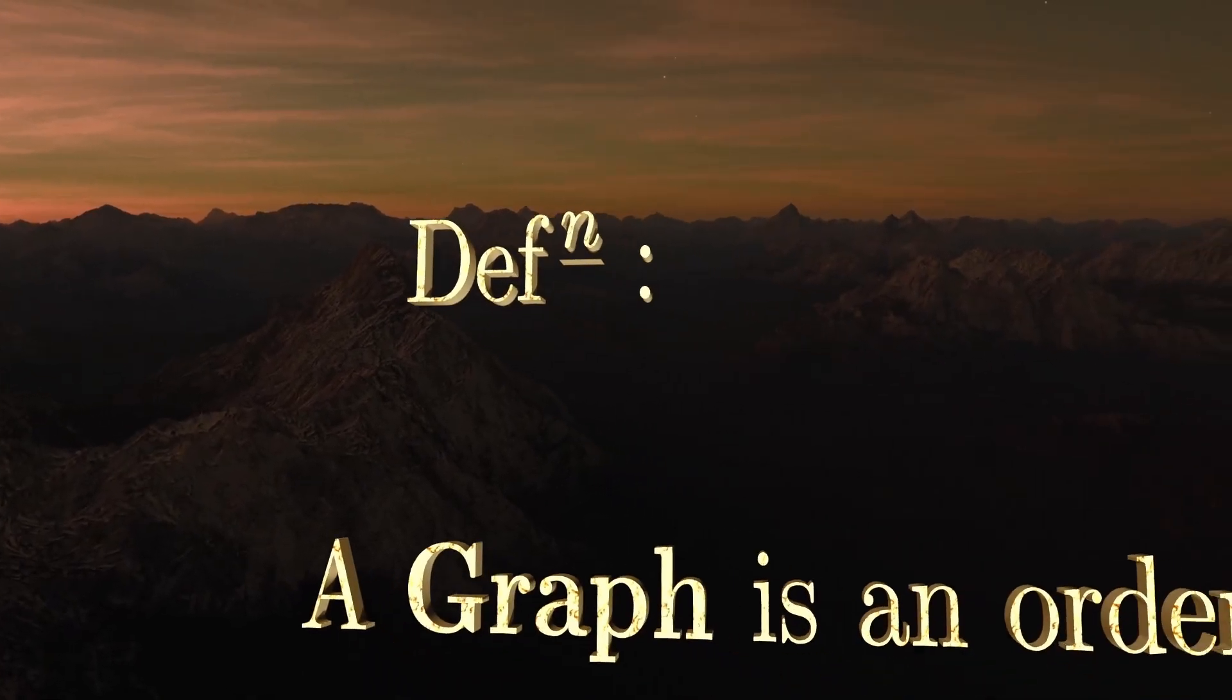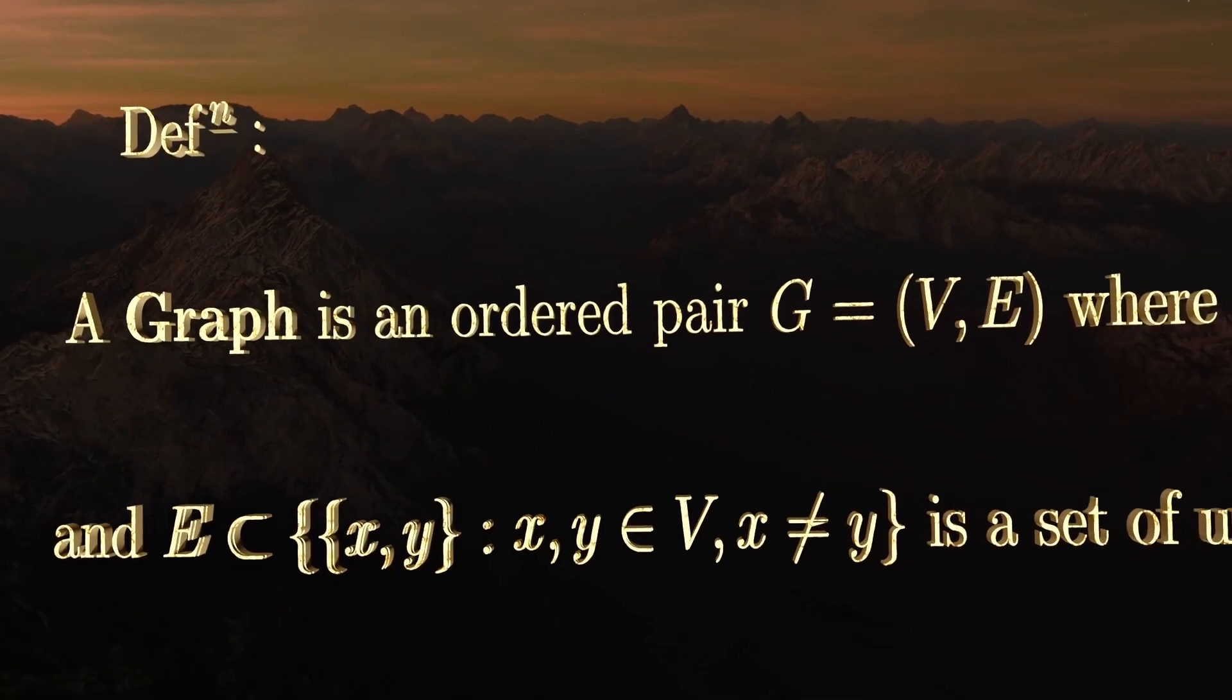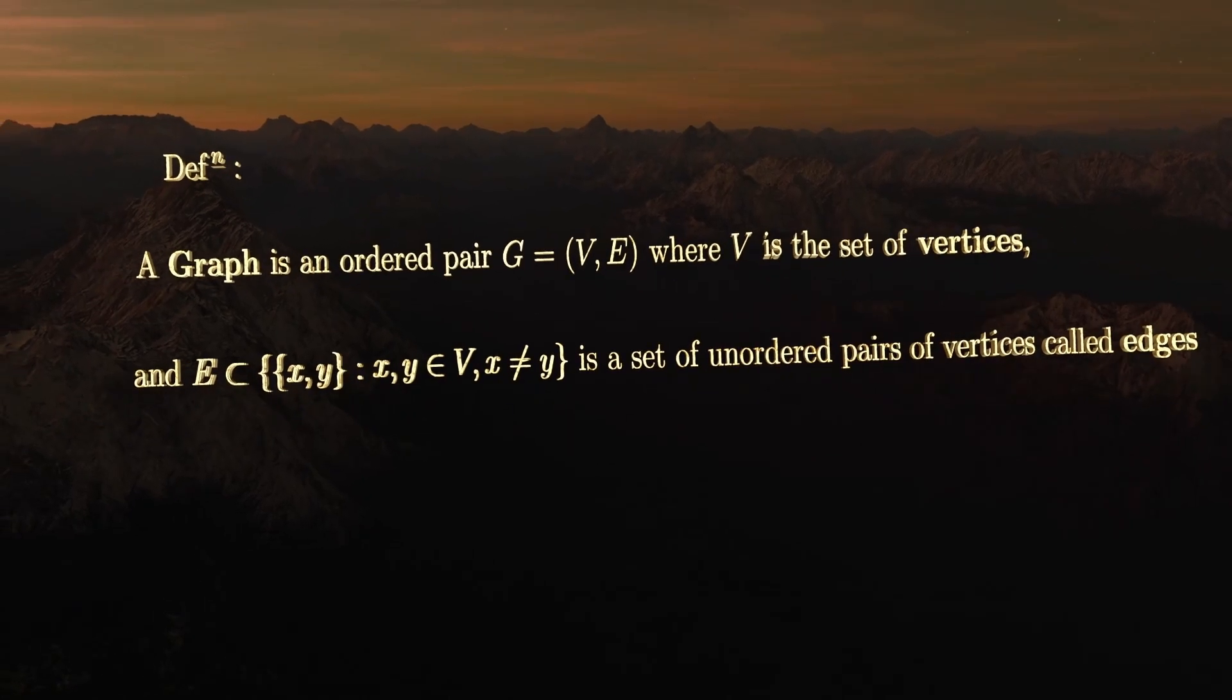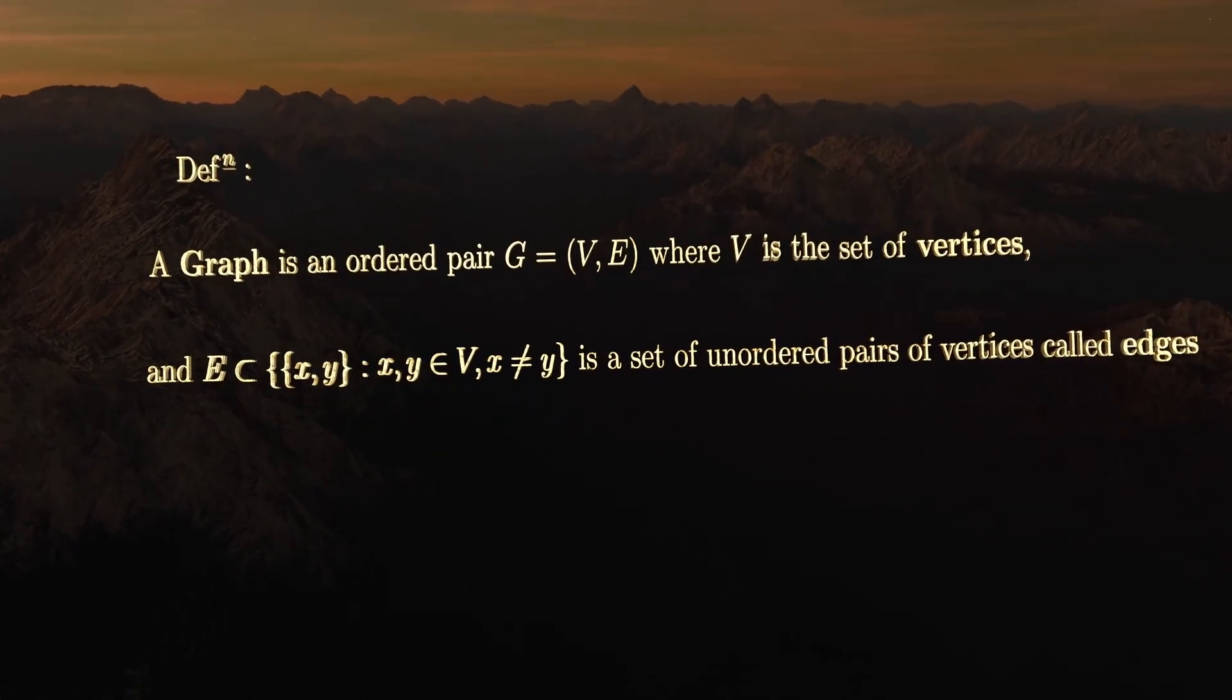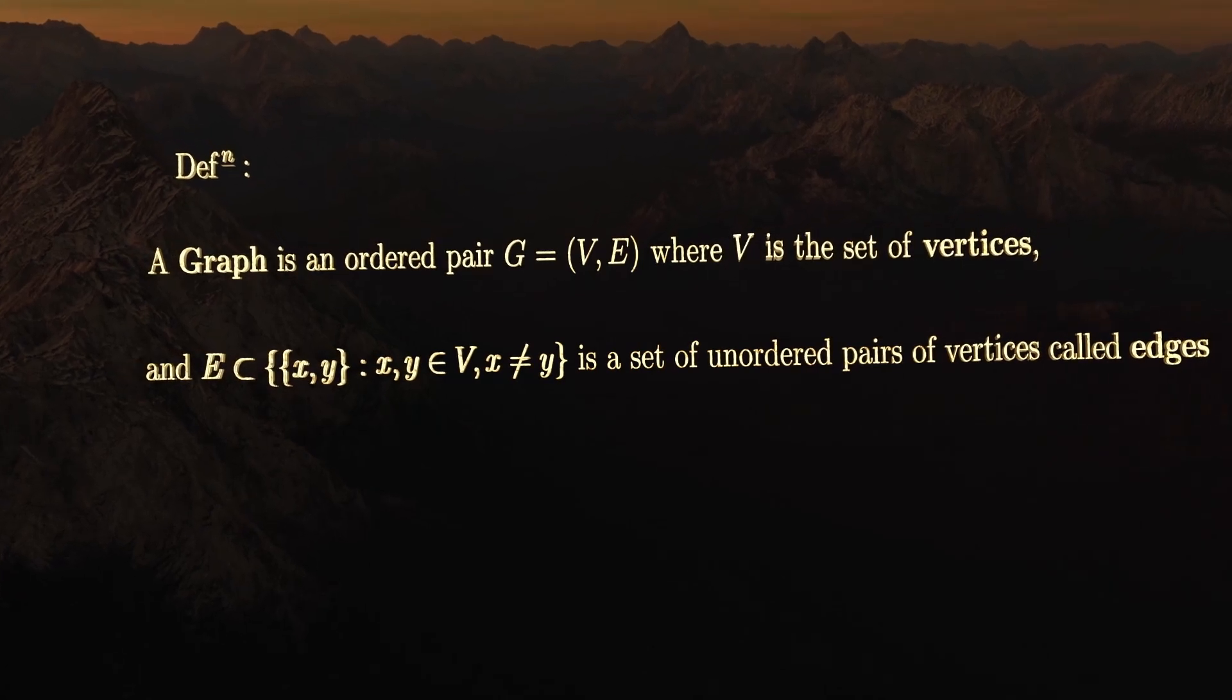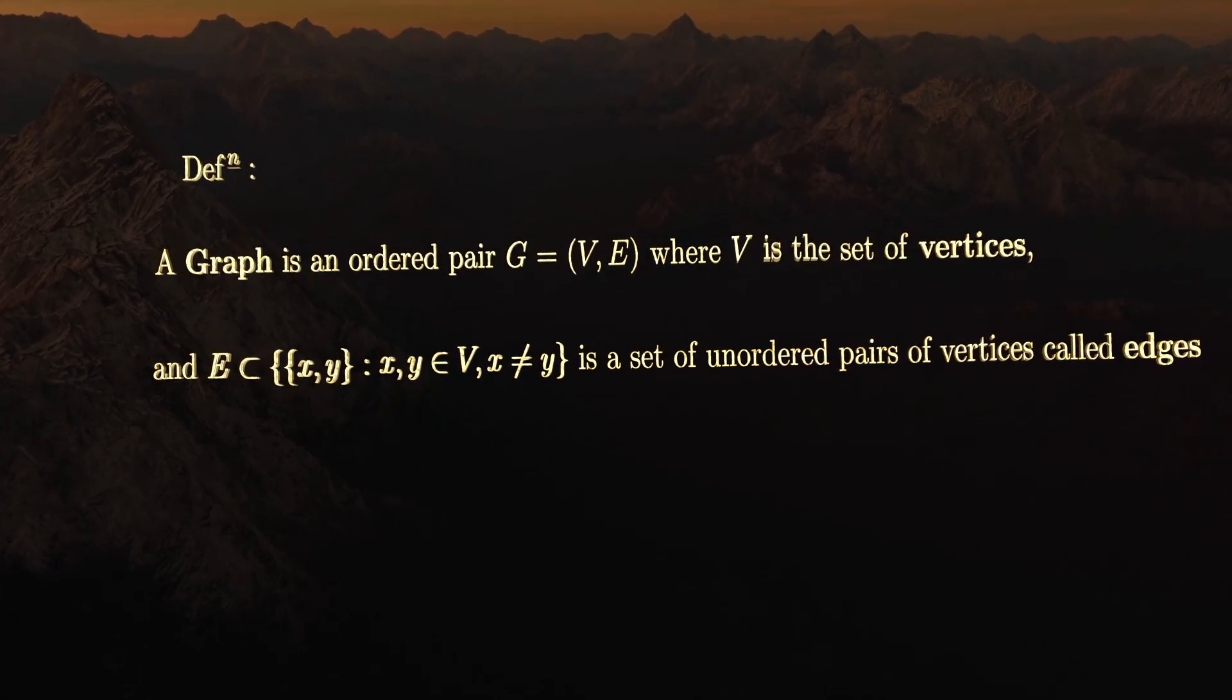We shall begin by formalizing exactly what we mean by a graph, because there are some ambiguities that we need to make clear, like do we allow loops? So we define a graph to be an ordered pair of two sets. The first set is a set of vertices, so these are our nodes, and the second set is a set of edges.